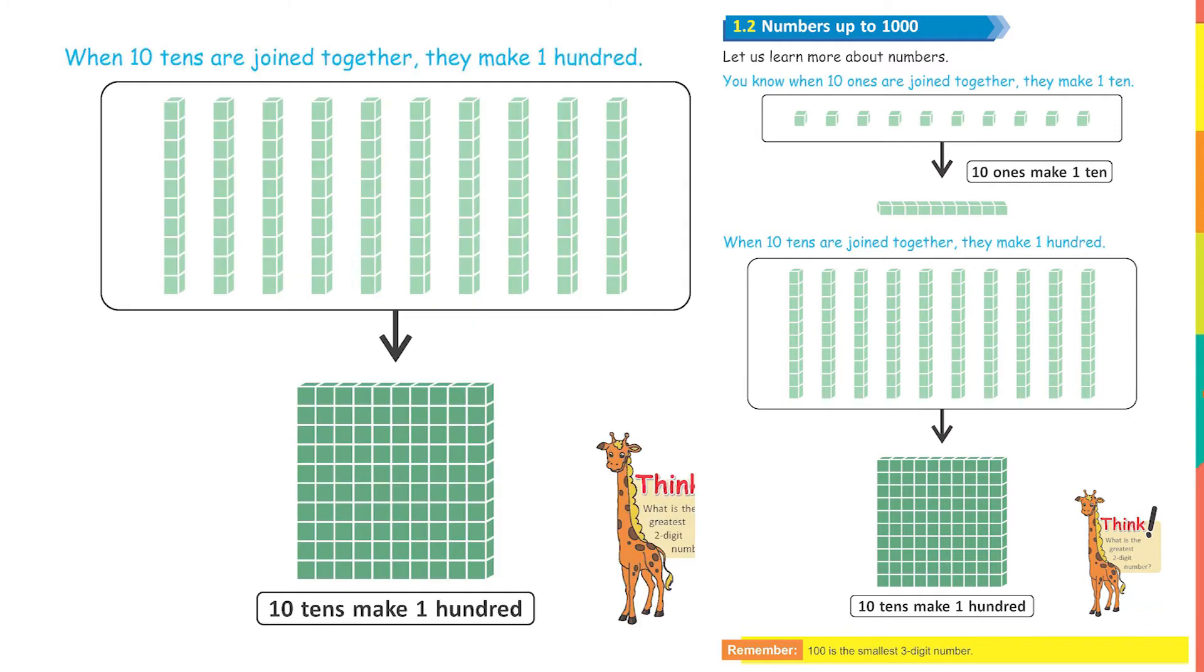Now if you look at the picture, there are 10 bars. There are 10 bars. And how many objects are there in one bar? There are 10 objects. Let's count and verify. 1, 2, 3, 4, 5, 6, 7, 8, 9, 10. Yes, there are 10 objects. There are 10 units in one 10 and we have 10 bars here.